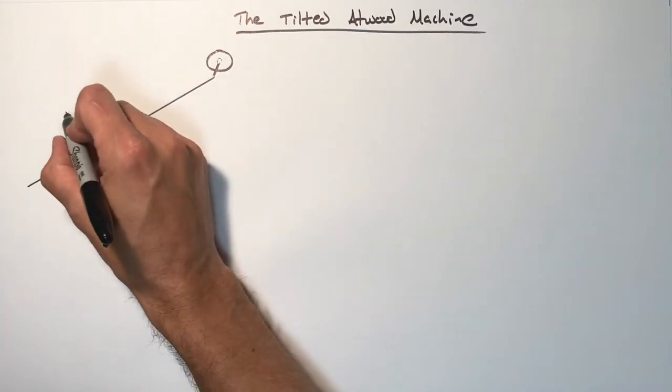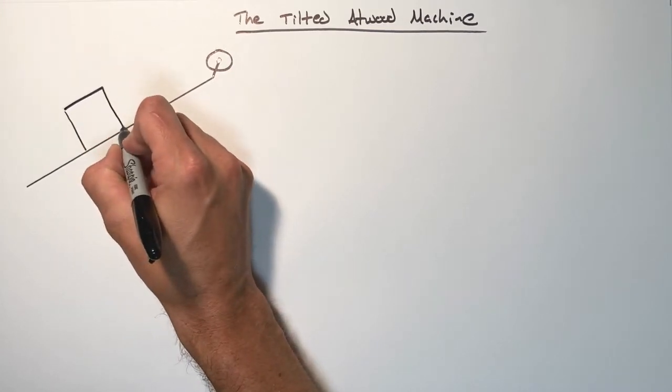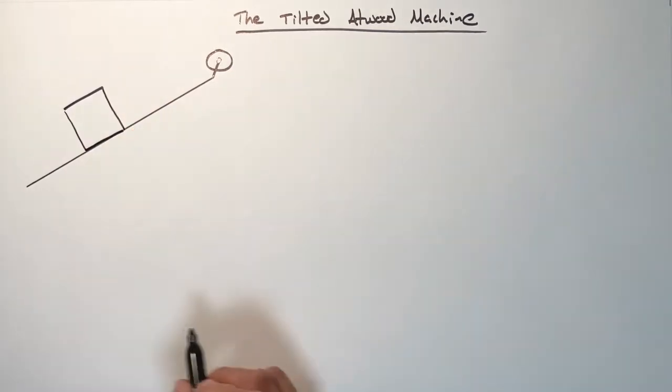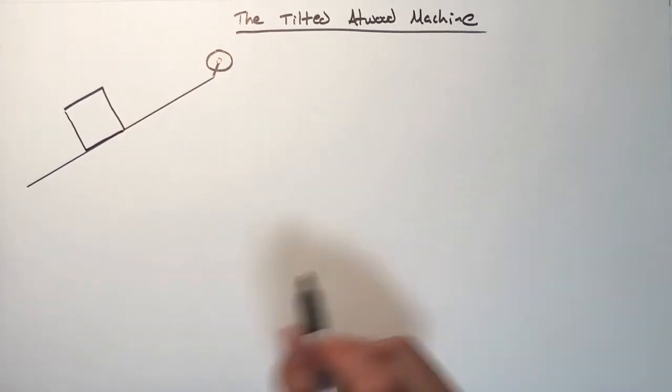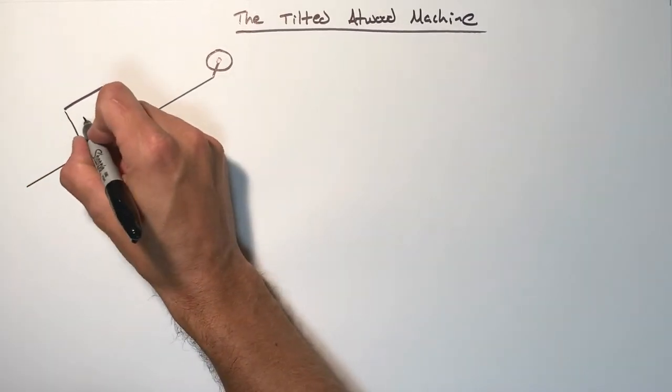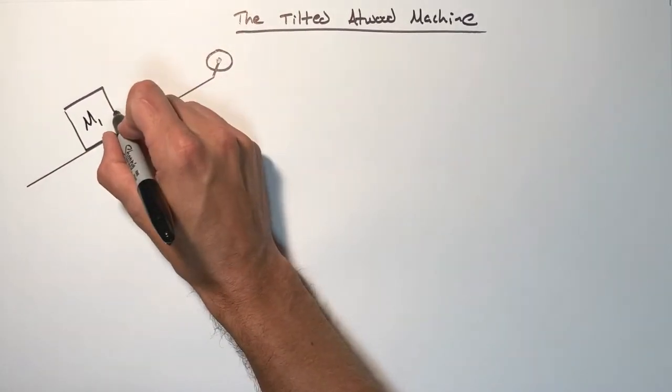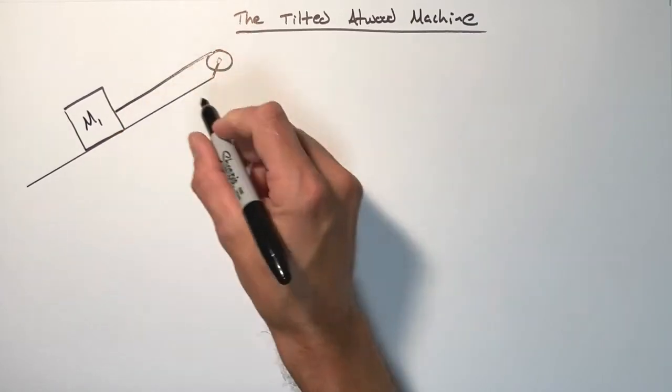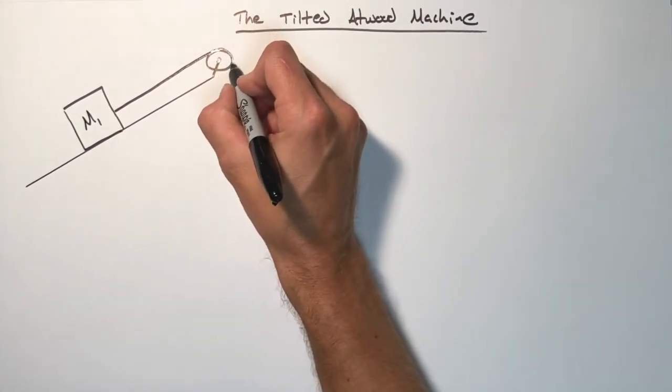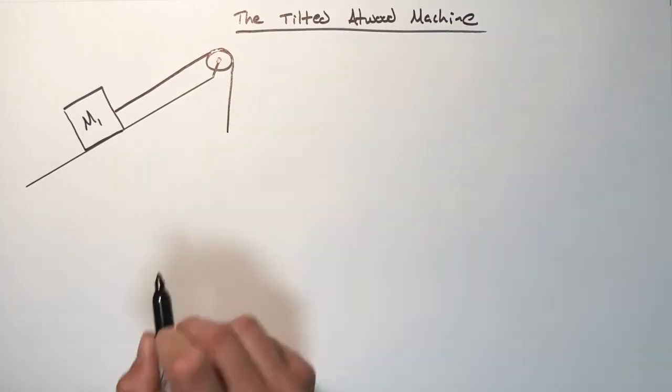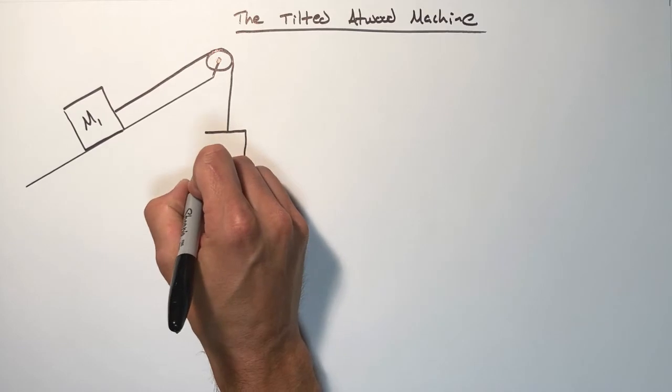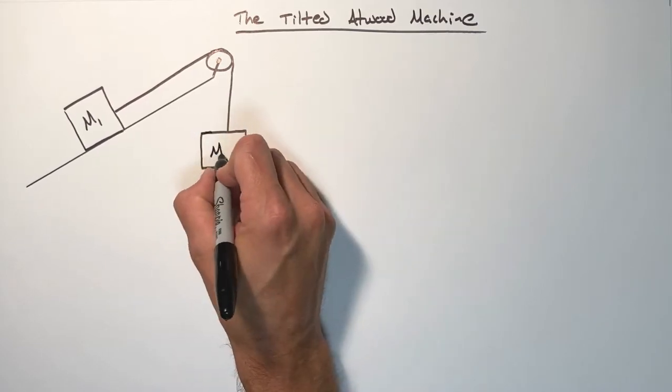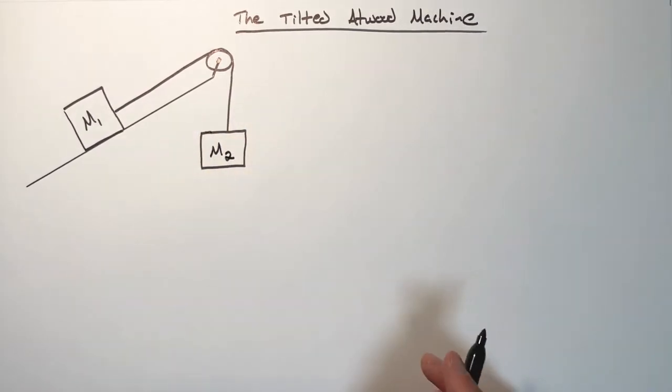These two blocks consist of one block which is sitting on a frictionless hill. If you want to make this problem more complicated you put friction on the hill. Again we'll tackle that later. This block has some mass. It's connected by a string that runs parallel to the hill up over the pulley and that string hangs down the other side of the pulley to a block over here.